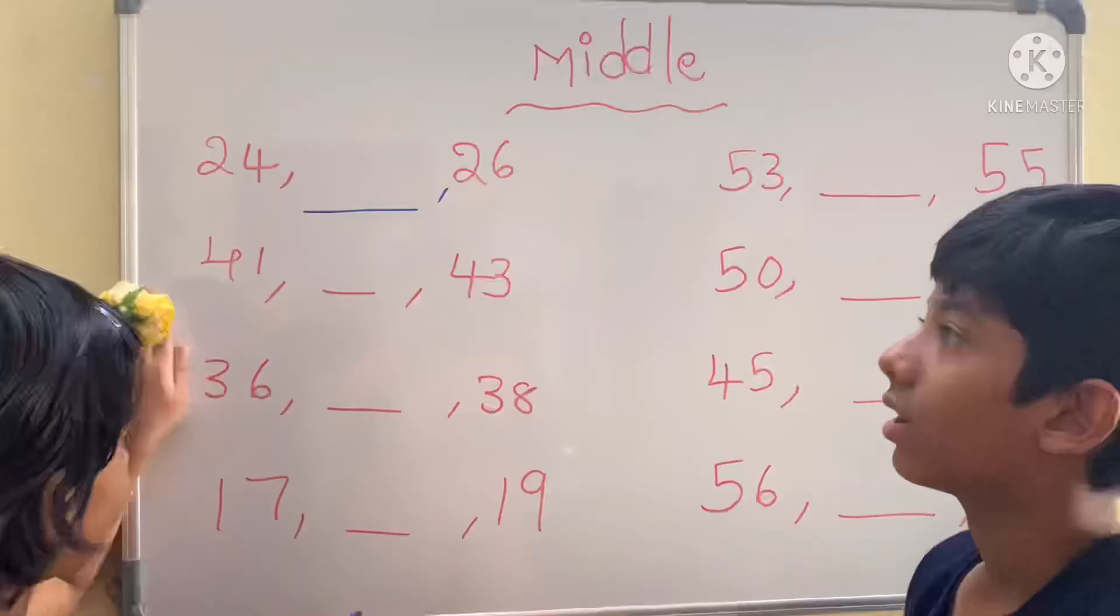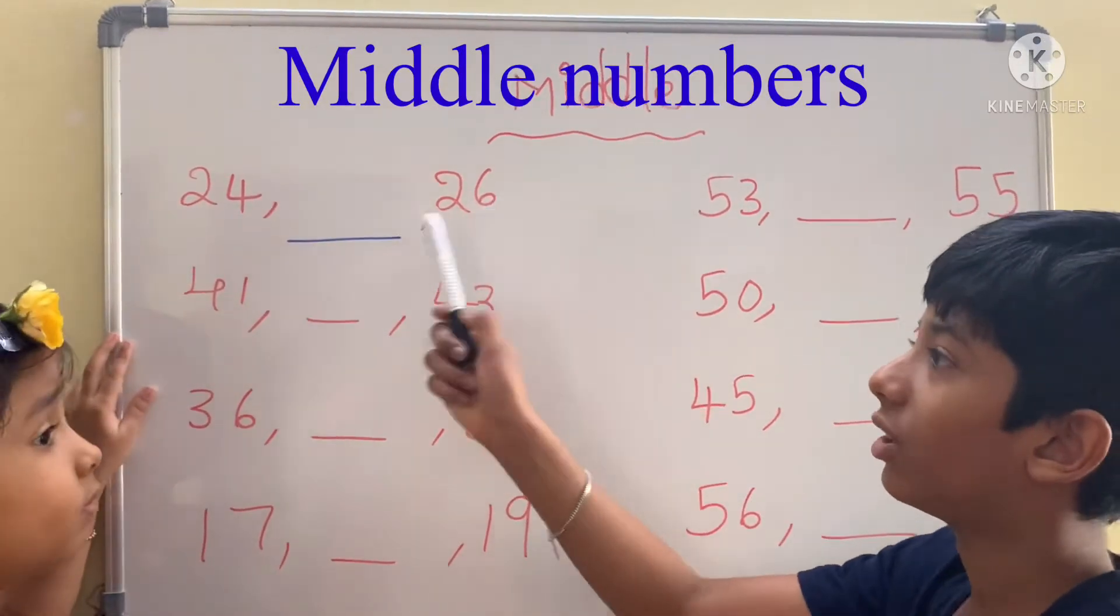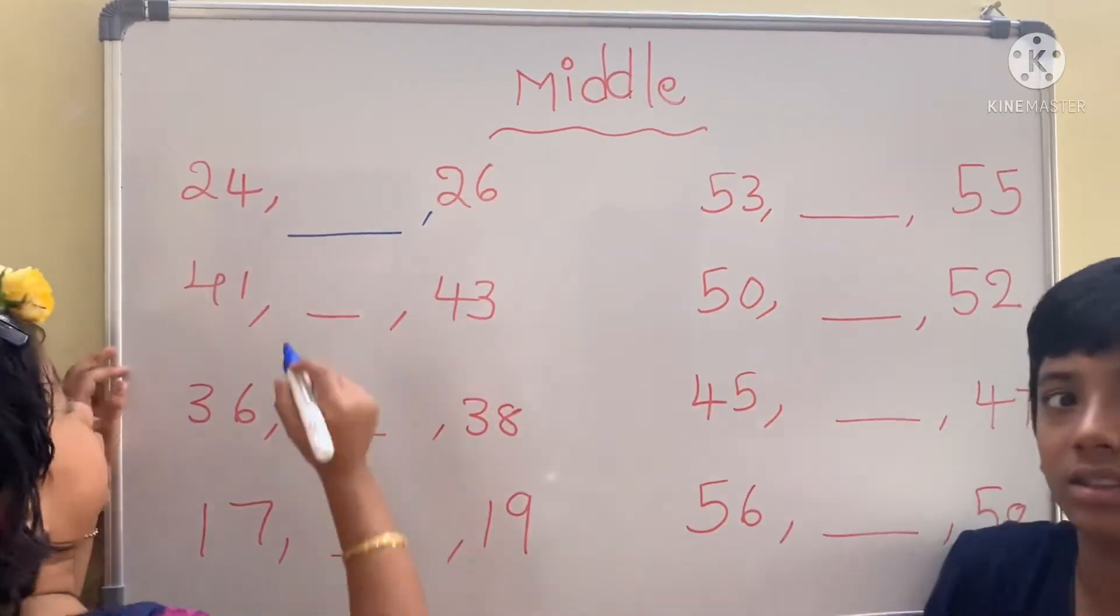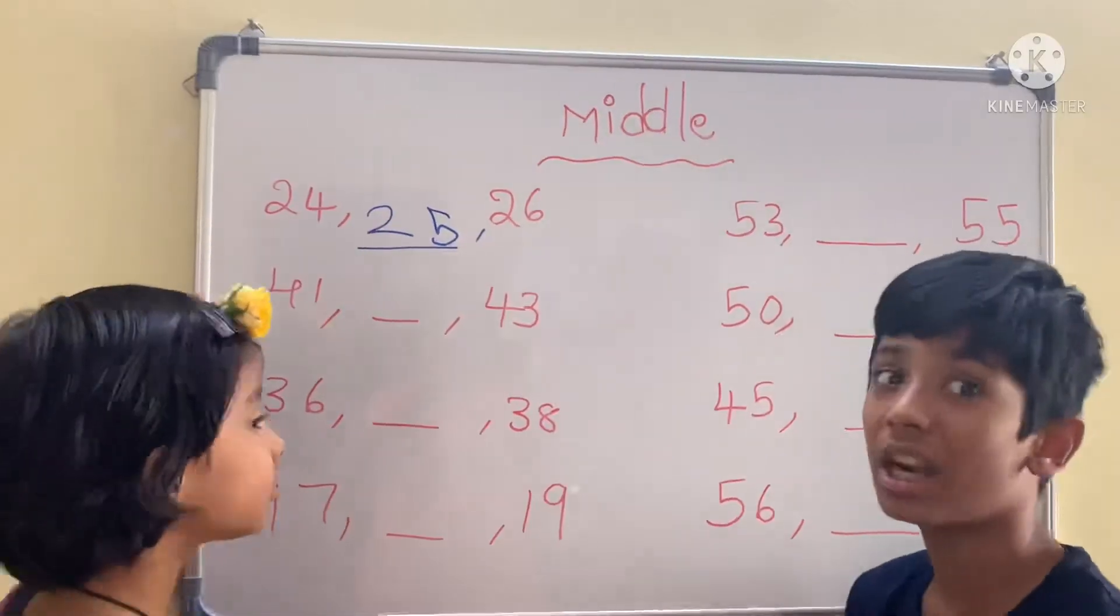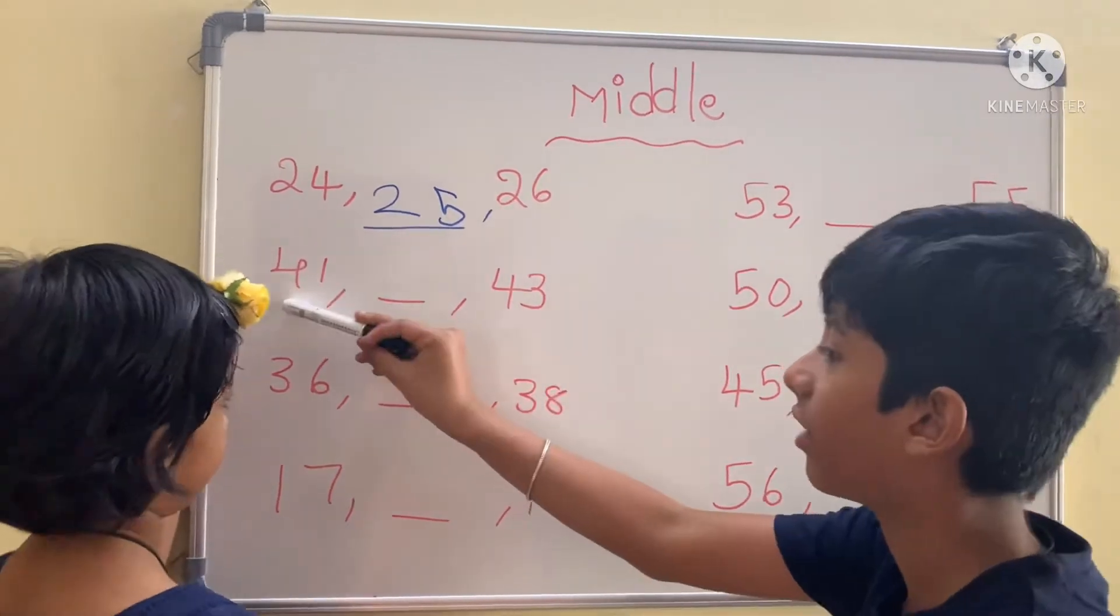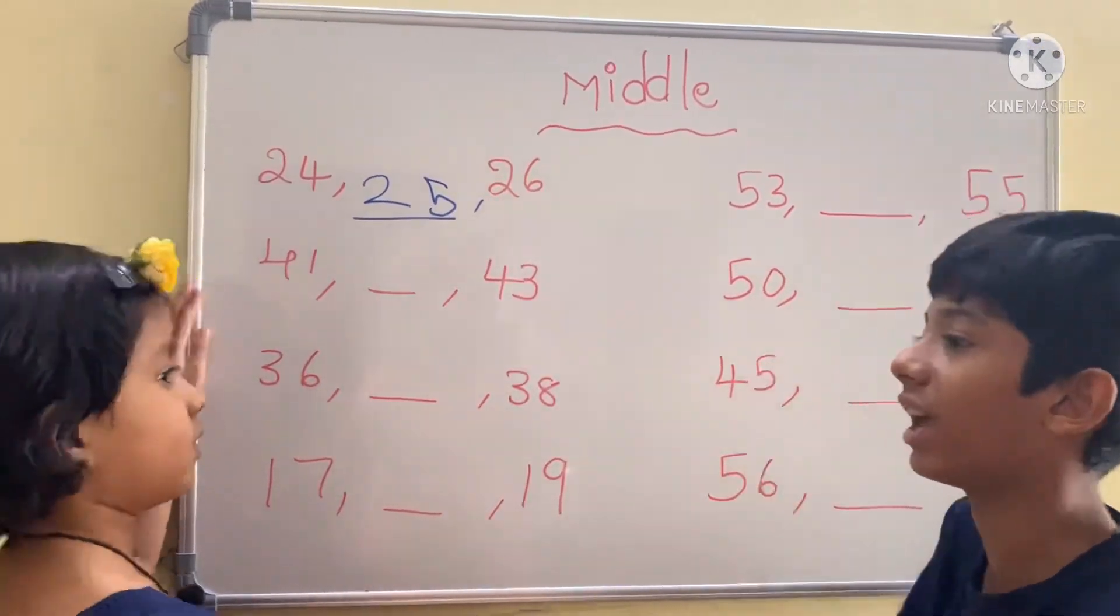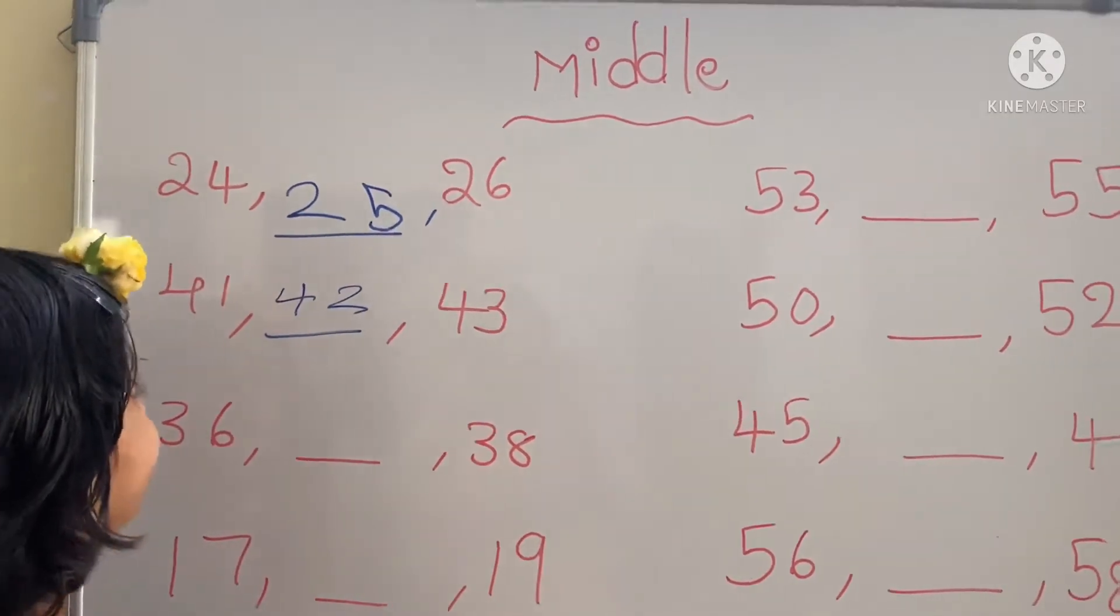What is the number in the middle of 24 and 26? 25. What number is in the middle of 41 and 43? Four tens, two ones, 42.